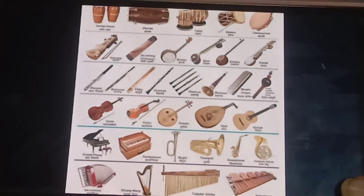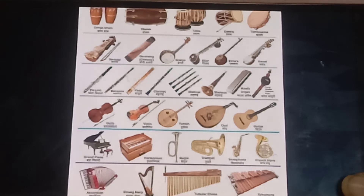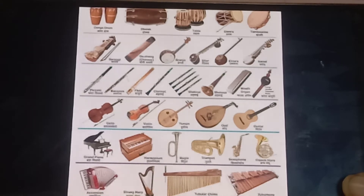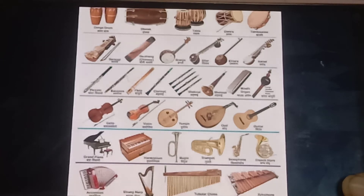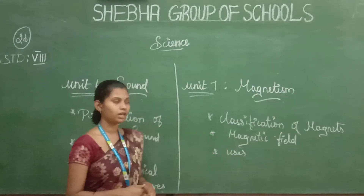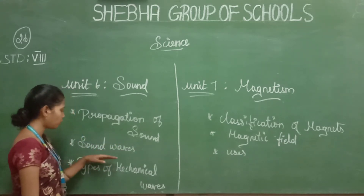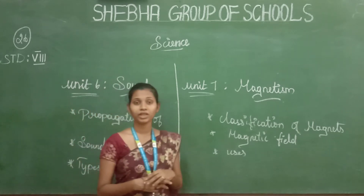Musical instruments. Some sounds are pleasing to the ear and make us happy. The sound that provides a pleasing sensation to the ear is called music, which is produced by a regular pattern of vibration. Musical instruments are categorized into four types: wind instruments, reed instruments, stringed instruments, and percussion instruments. In this lesson we learned about the propagation of sound, sound waves, types of mechanical waves, and musical instruments.